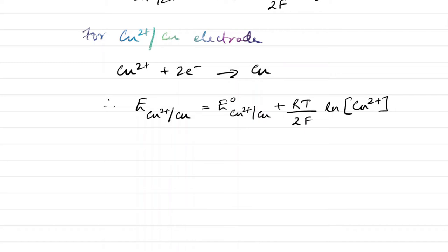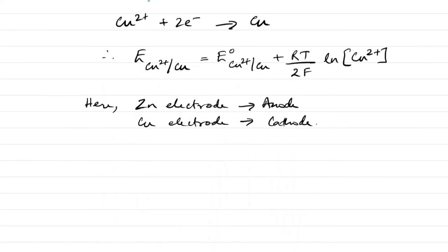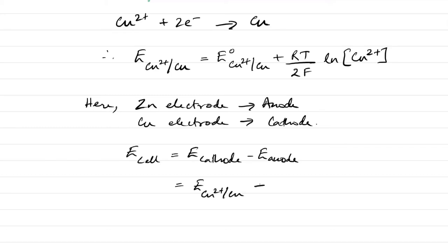According to the given reaction, oxidation takes place at the zinc electrode and reduction takes place at the copper electrode. Hence, the zinc electrode is the anode and the copper electrode is the cathode. The cell potential equals the electrode potential of the cathode minus the electrode potential of the anode — that is, E(Cu) minus E(Zn).